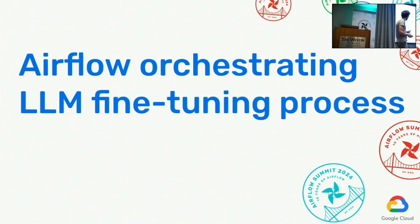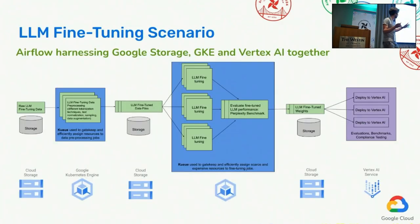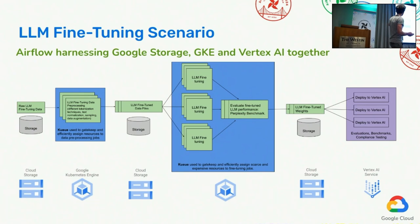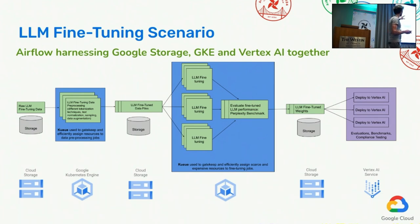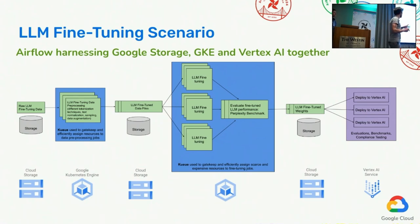Starting with Airflow orchestrating an LLM fine-tuning process. We took the Google Gemma model, which is a very lightweight model but the same architecture used for Gemini. We start with preparing some data on a GCS bucket that will later be used for fine-tuning. The first step, pre-processing, is doing tokenizing and sampling of the raw data — and this first step is already done on the Kueue. Then we store it back to GCS and start the actual fine-tuning job. This is LoRA — low-rank adaptation — fine-tuning, which focuses on modifying only parts of the weights in the model. It gives pretty nice results. We followed some of the Vertex AI public demos for that.